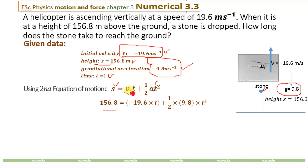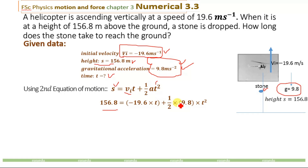The initial velocity of minus 19.6 meters per second is multiplied by t, plus ½ and 9.8 meters per second squared — the value of the acceleration — multiplied by t². We will solve this equation for the time. First, we will simplify: dividing 9.8 by 2 gives 4.9t². So we have 156.8 = minus 19.6t + 4.9t².